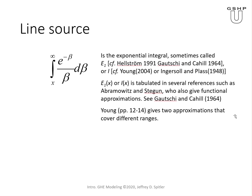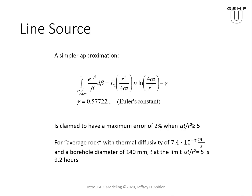It's tabulated in references such as Abramowitz and Stegen, and they also give some functional approximations. The simplest approximation is that the exponential integral of the quantity r squared over 4 alpha t is actually equal to the natural log of 4 alpha t over r squared minus gamma, which is Euler's constant. This expression is typically claimed to have a maximum error of 2% when alpha t over r squared is greater than or equal to 5.